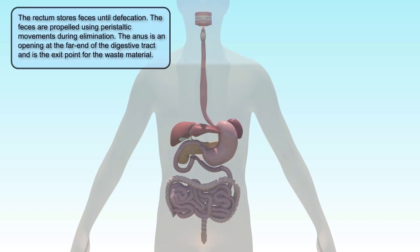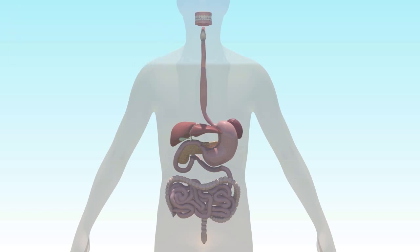The rectum stores feces until defecation. The feces are propelled using peristaltic movements during elimination. The anus is an opening at the far end of the digestive tract and is the exit point for the waste material.